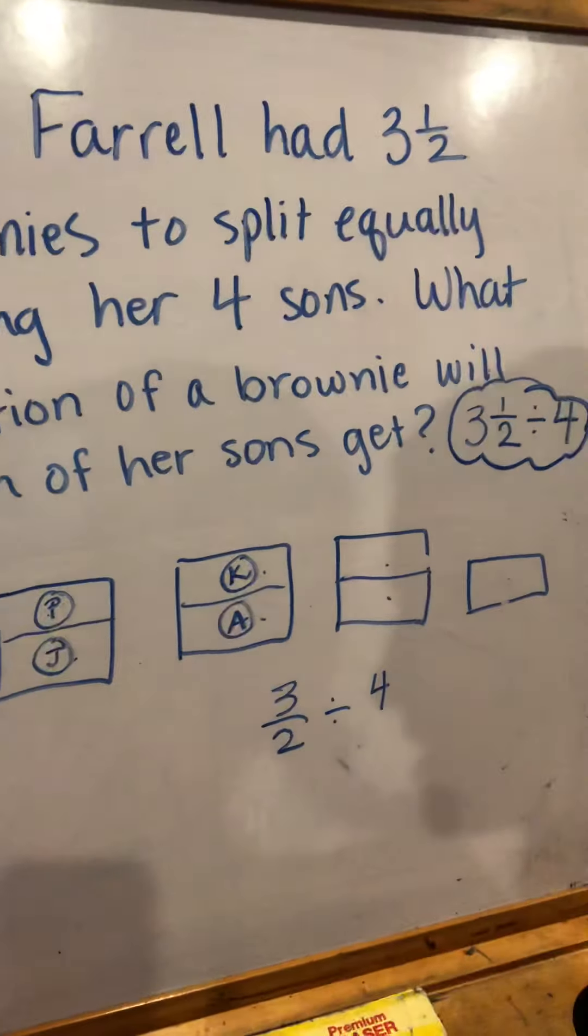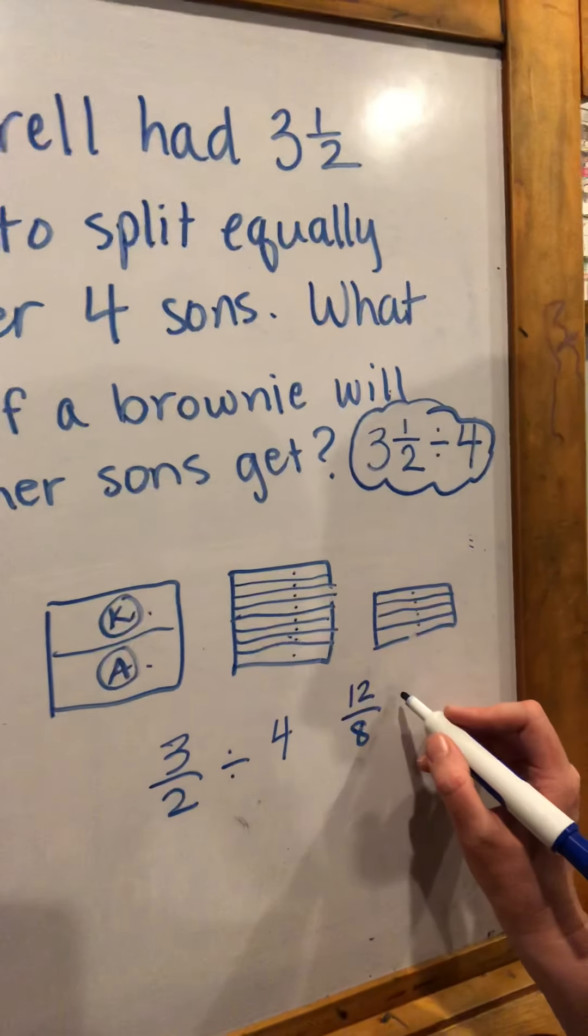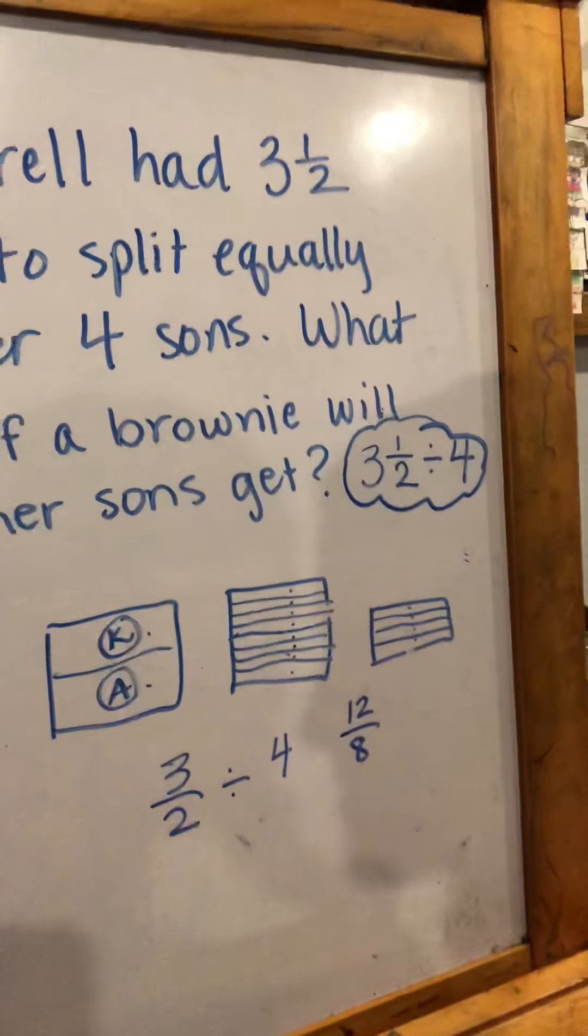As I'm looking at these halves, I'm thinking, how could I divide those up into four parts? When I divided those two halves up into fours each, I'm now dealing with eighths. So each of these are worth one eighth. And over here, those are also eighths as well. So now I'm dealing with twelve eighths because I have eight here and four here. I have to give that equally among four boys.